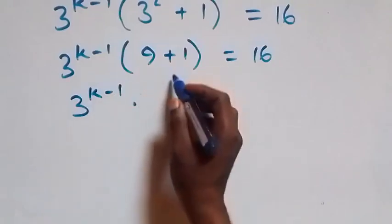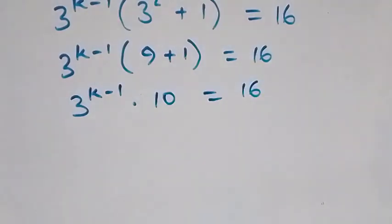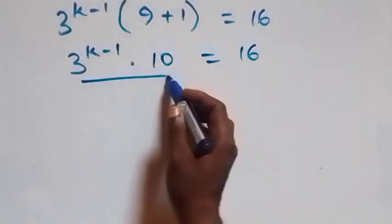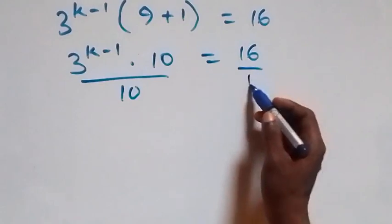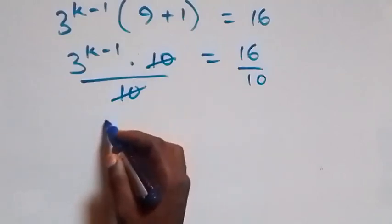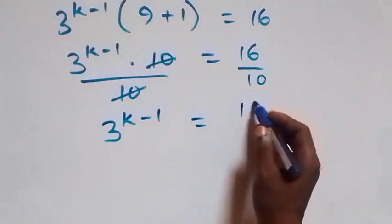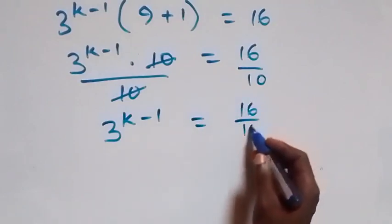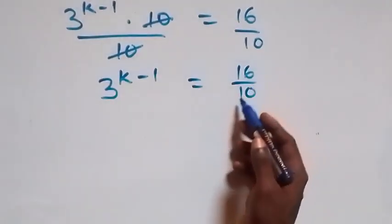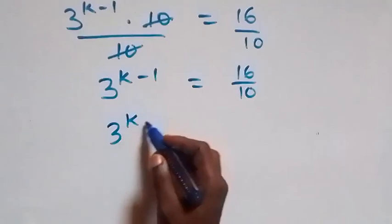That gives 10, so we have 3 raised to power k minus 1 times 10 equals to 16. Next step, we divide both sides by 10, so 10 cancels each other and we have 3 raised to power k minus 1 equals to 16 over 10. We can reduce this — 2 divides each and we have 3 raised to power k minus 1 equals to 8 over 5.